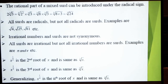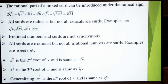جتنی بھی surds ہوں گے وہ radicals ضرور ہوں گے — لیکن جتنی بھی radicals ہیں ضرور نہیں کہ وہ surd ہو۔ جیسے √25 = 5، √81 = 9 — نہ 5 اور نہ 9 surd ہے، لیکن یہ پھر بھی radical ہے۔ تو جتنی بھی radicals ہیں ضرور نہیں کہ وہ surd ہو، لیکن جتنی بھی surds ہوں گے وہ تمام radicals ضرور ہوں گے۔